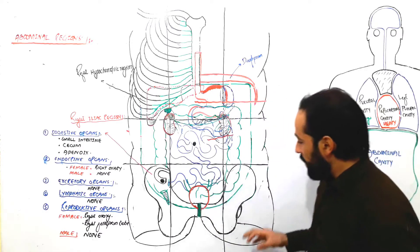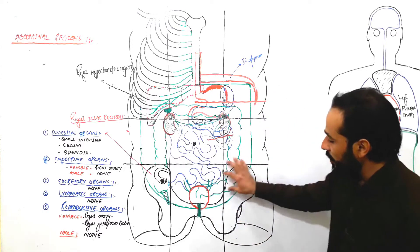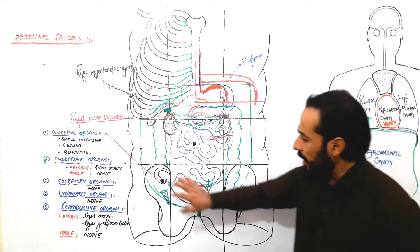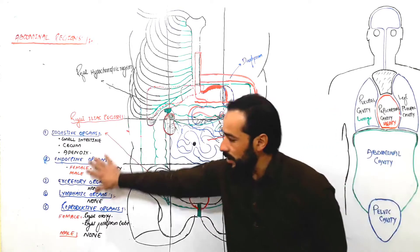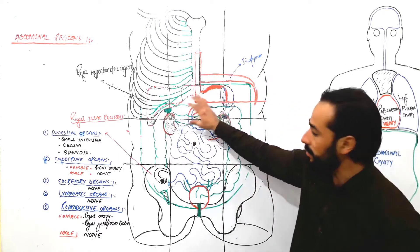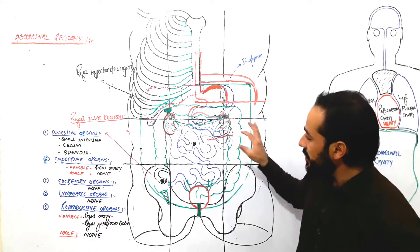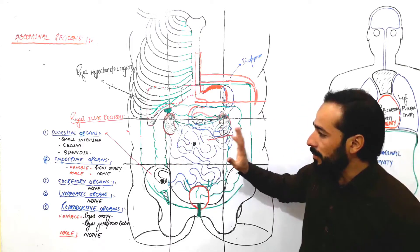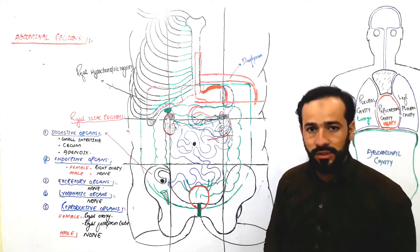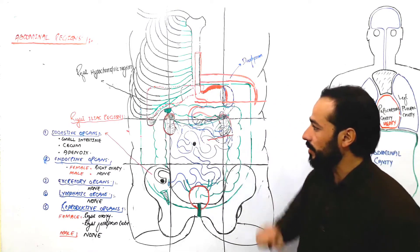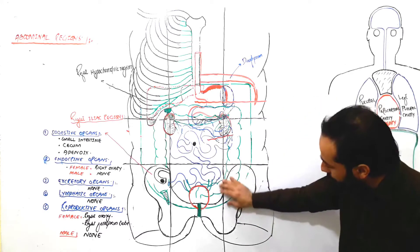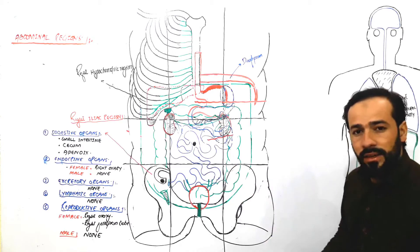Assalamualaikum, dear friends. Welcome back. Let's have a little knowledge about the organs which are present in your left iliac region. In the previous lecture, I discussed the organs present in your right iliac region, and in lectures before that we covered organs in the upper three and middle three regions of the abdomen. I will give the links to those videos in the description so you can watch them for a clear understanding.